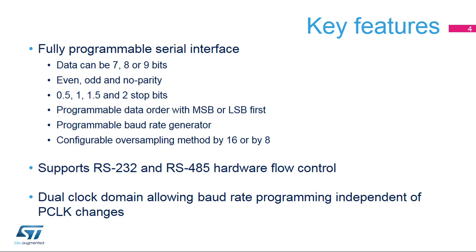The USART is a fully programmable serial interface featuring the following configurable parameters: data length, parity, number of stop bits, data order, baud rate generator, and configurable oversampling mode by 8 or by 16. You also have the option to use basic RS-232 flow control with CTS or clear-to-send and RTS or request-to-send signals. The RS-485 DE or driver-enabled signal is also supported.